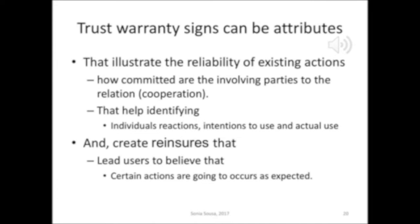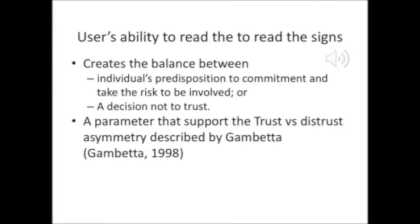Trust warranty signs can help us understand how committed the involved parties are to the relationship. They help us identify individual reactions, intentions, and actual roles, and also create reassurances that certain transactions are going to occur as expected. So, our ability to read signs creates a balance between our predisposition to be committed to something — to take the risk of being involved — and the decision not to suppress or withhold trust.